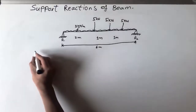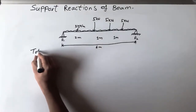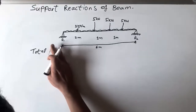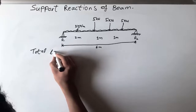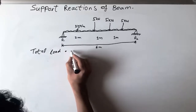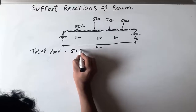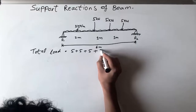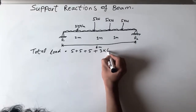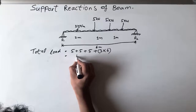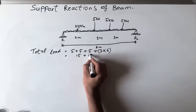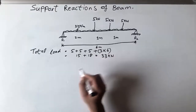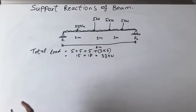First, we need to calculate the total load acting on the beam. Total load is equal to 5 plus 5 plus 5, and then 3 multiplied by 6. So we have 15 plus 18, which equals 33 kN acting on this beam.